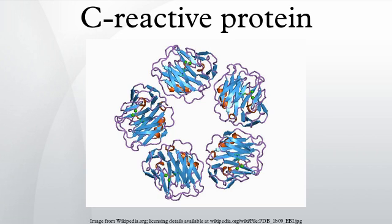C-reactive protein is an annular, pentameric protein found in the blood plasma, the levels of which rise in response to inflammation. Its physiological role is to bind to phosphocholine expressed on the surface of dead or dying cells in order to activate the complement system via the C1-Q complex. CRP is synthesized by the liver in response to factors released by macrophages and fat cells. It is a member of the pentraxin family of proteins.